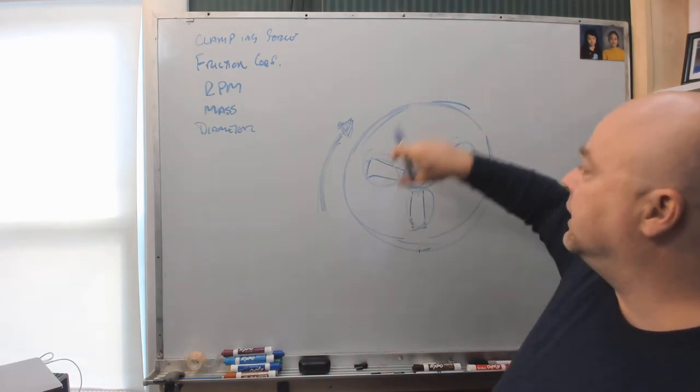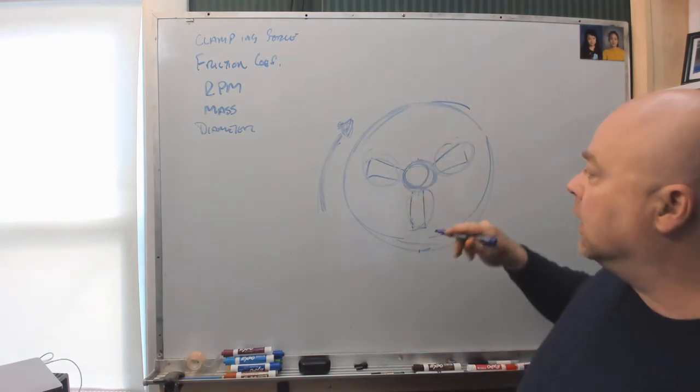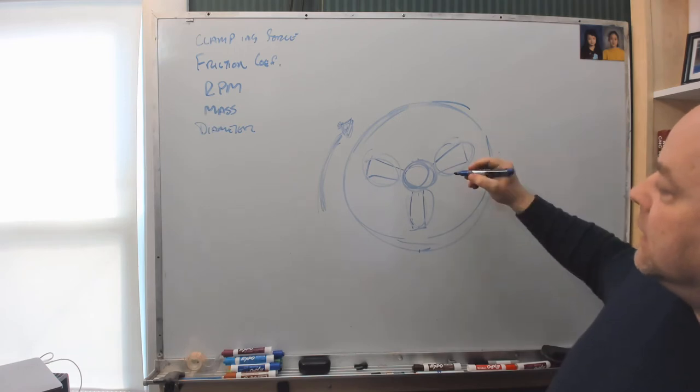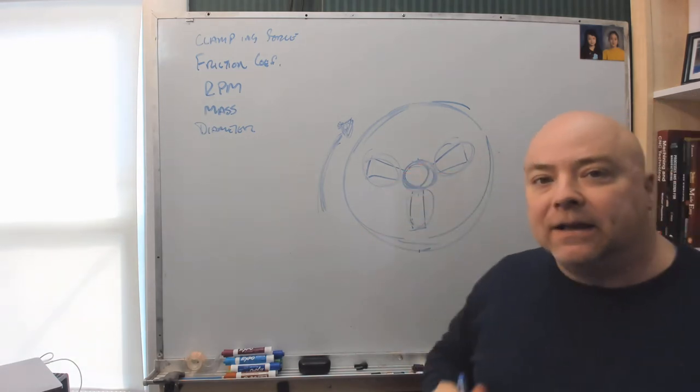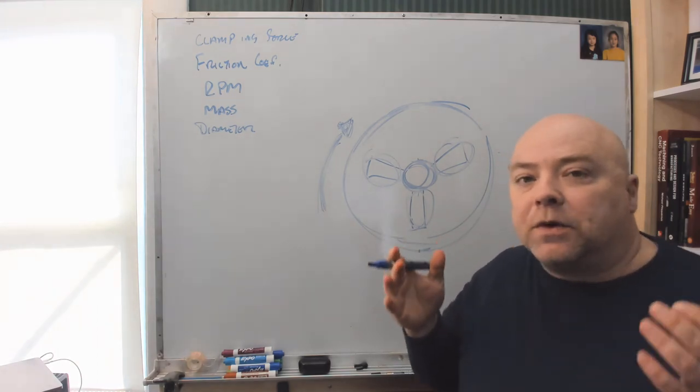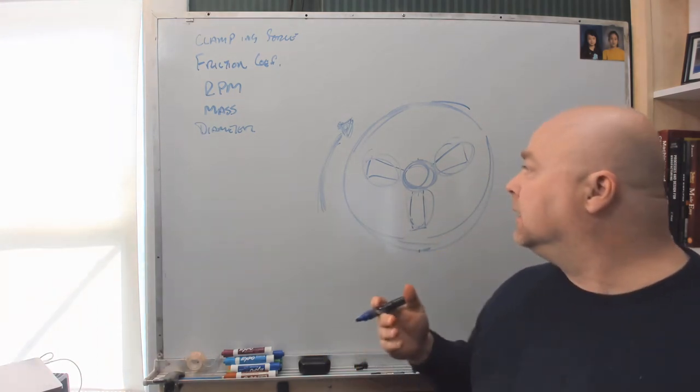while the chuck continues to rotate, or if we're doing an outside turning operation, it's trying to push the workpiece back into the chuck. That's the worst case scenario, so that's what we're going to do the math for.